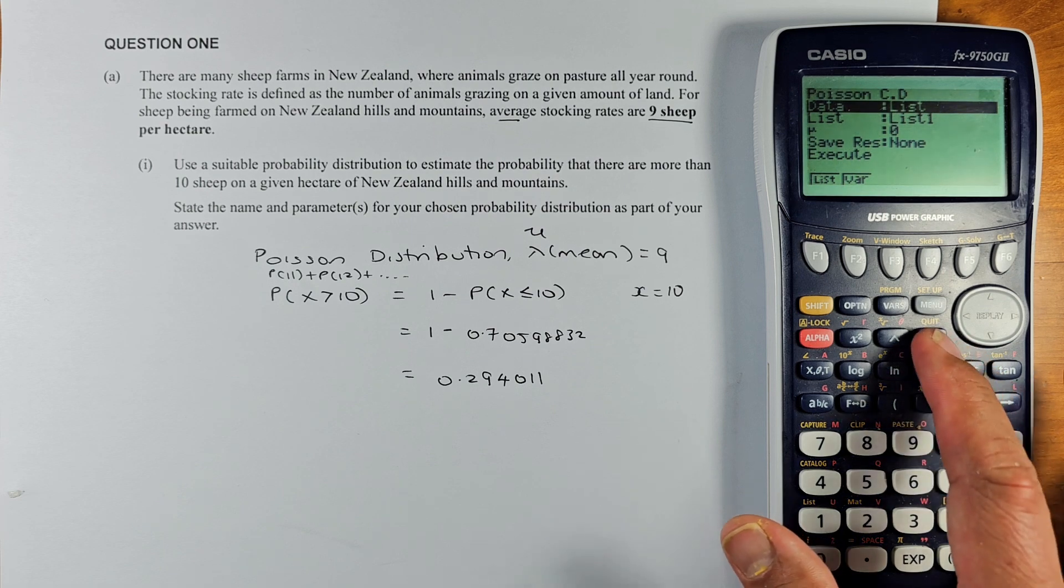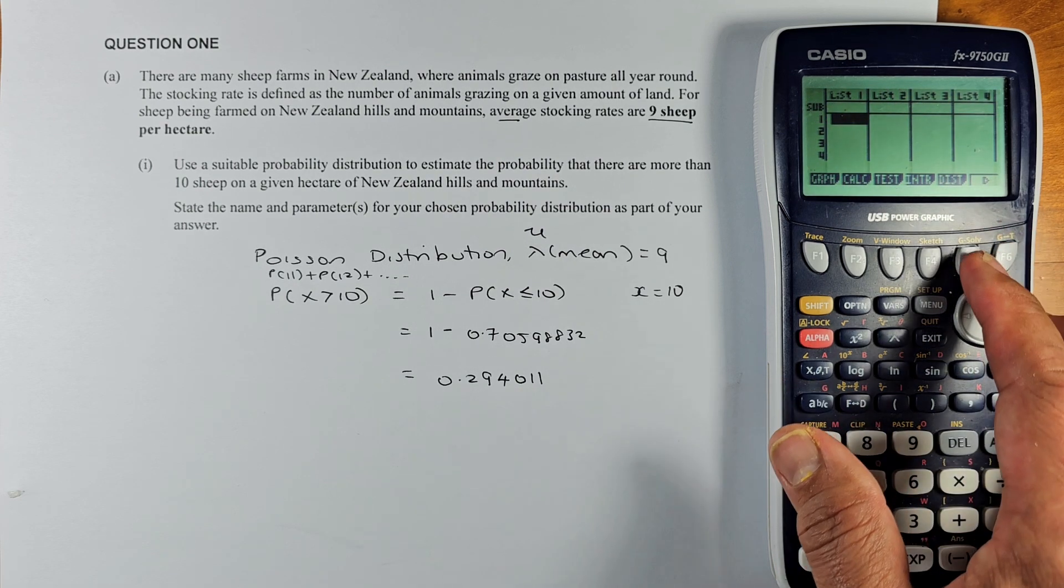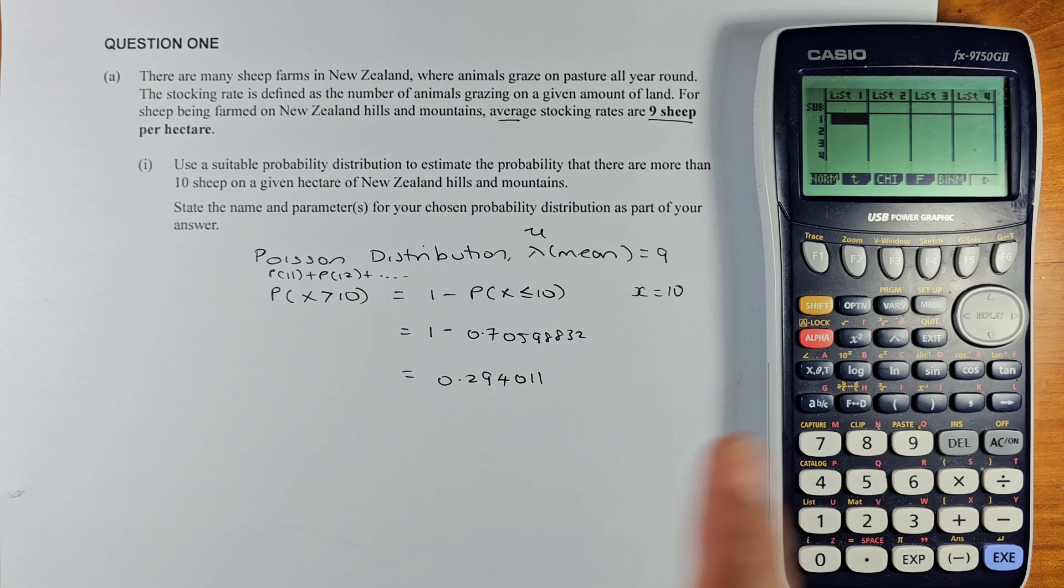And then execute, okay. Then you go to distribution F5, okay. You cannot find Poisson there. So what you're going to do, we're going to find this arrow, arrow F6.